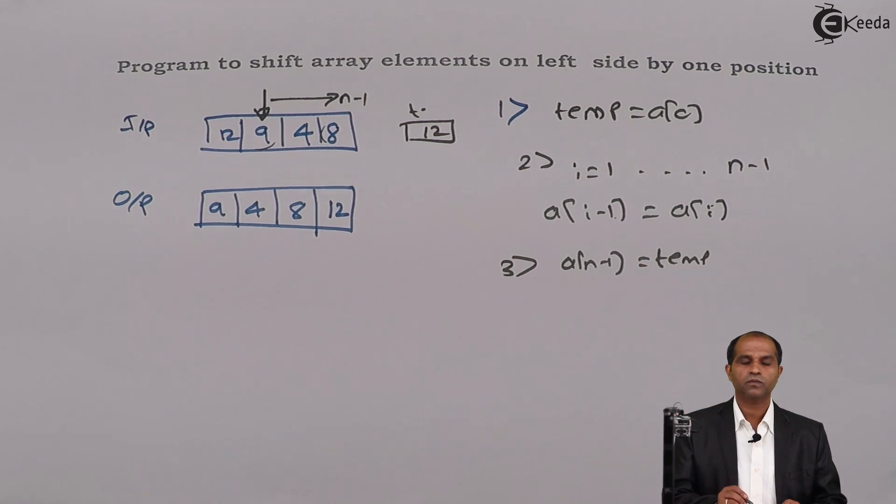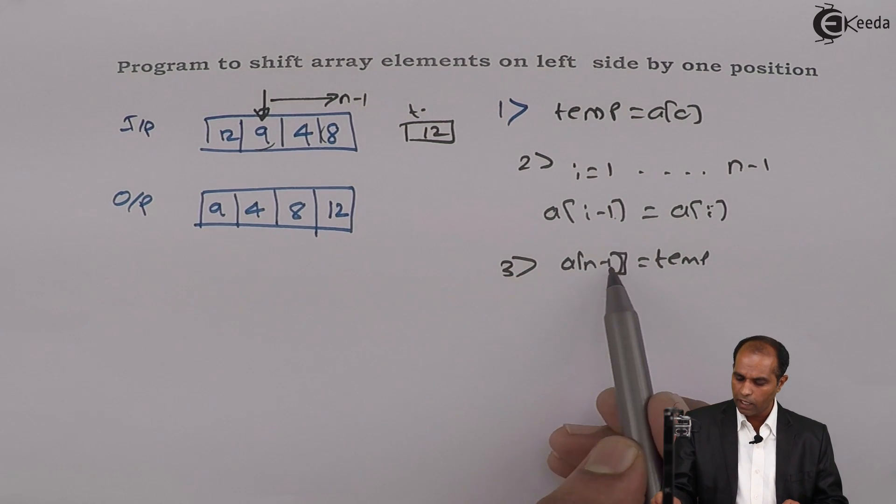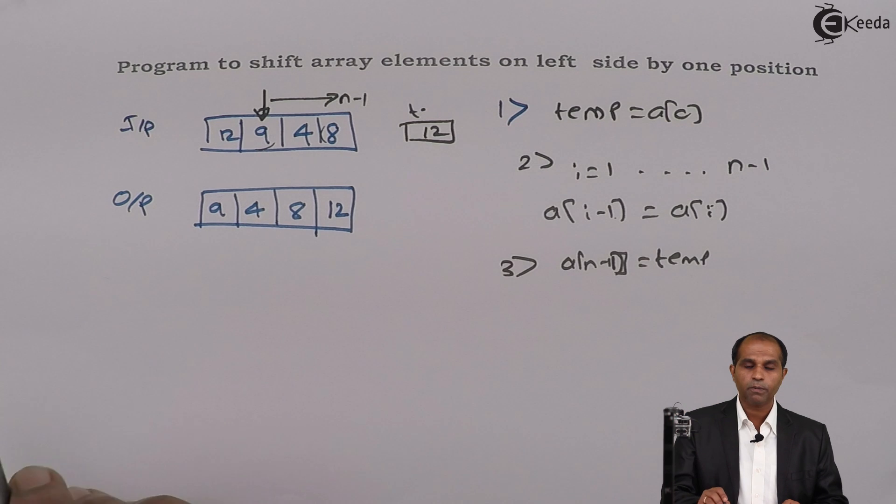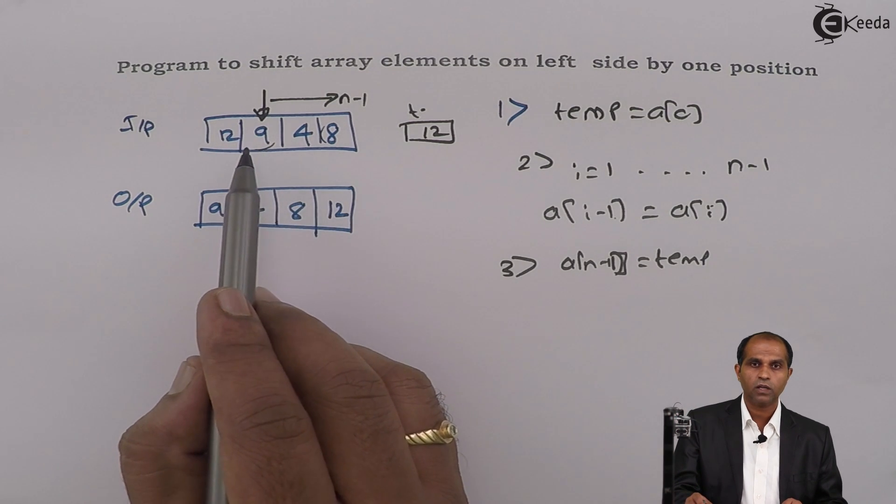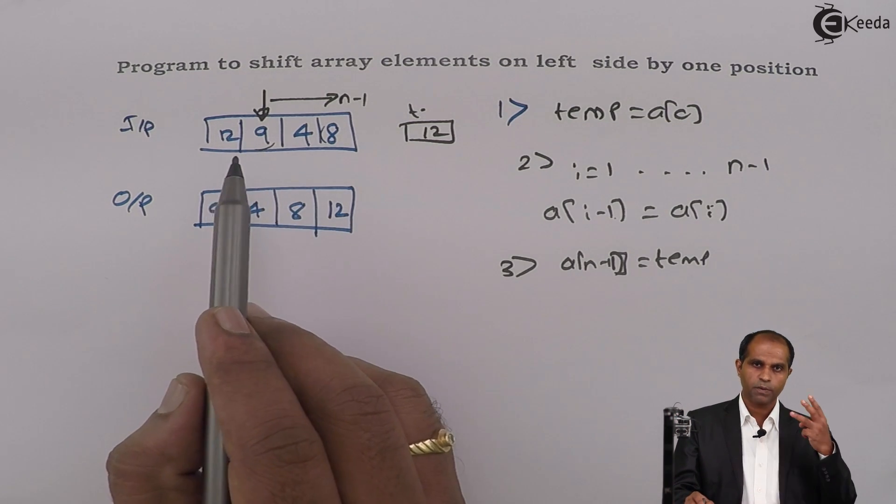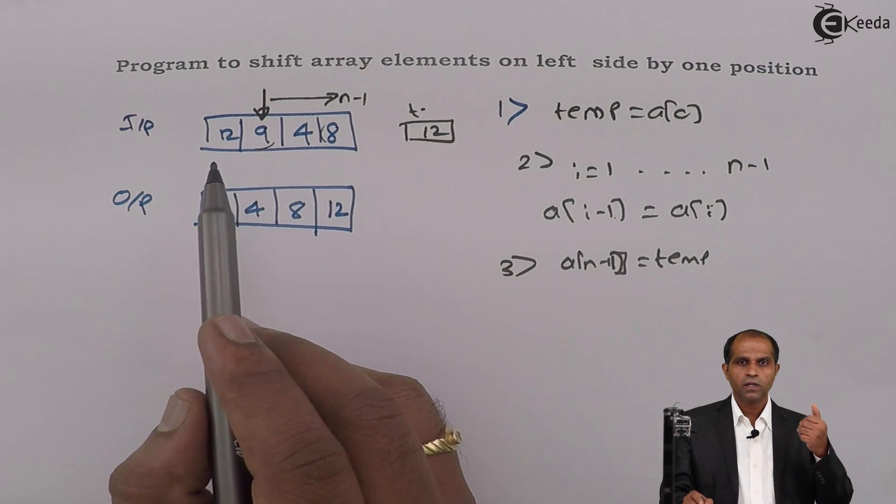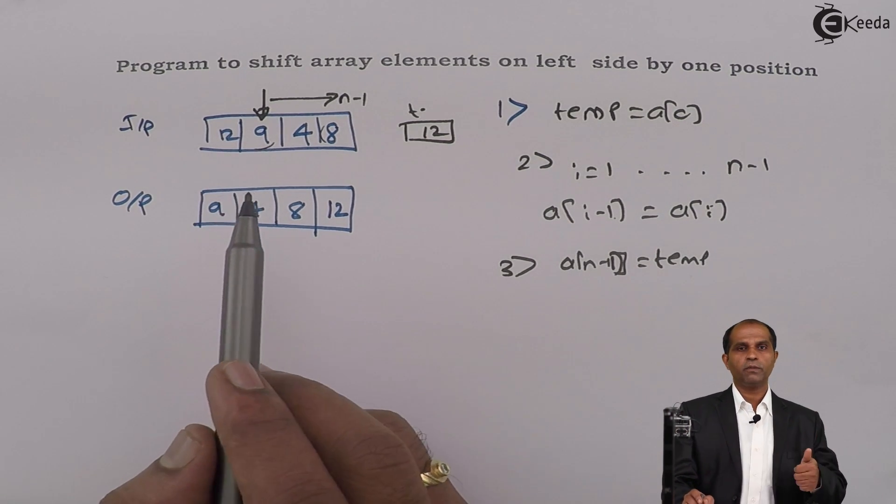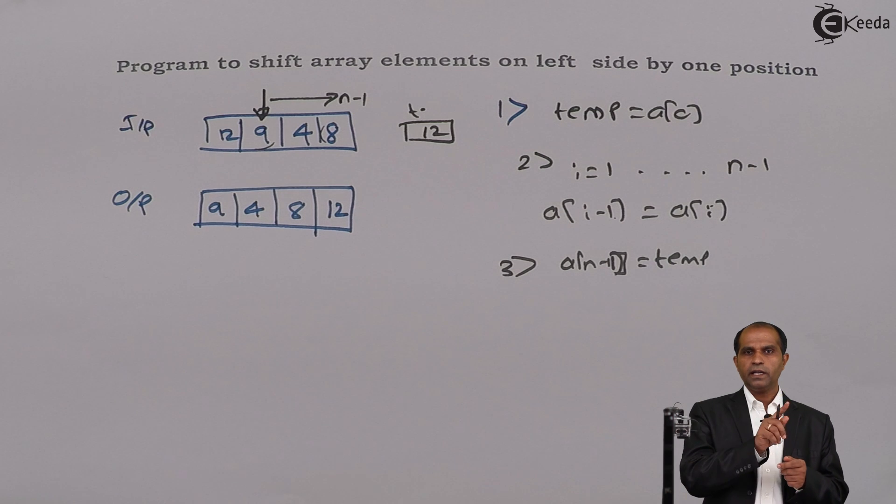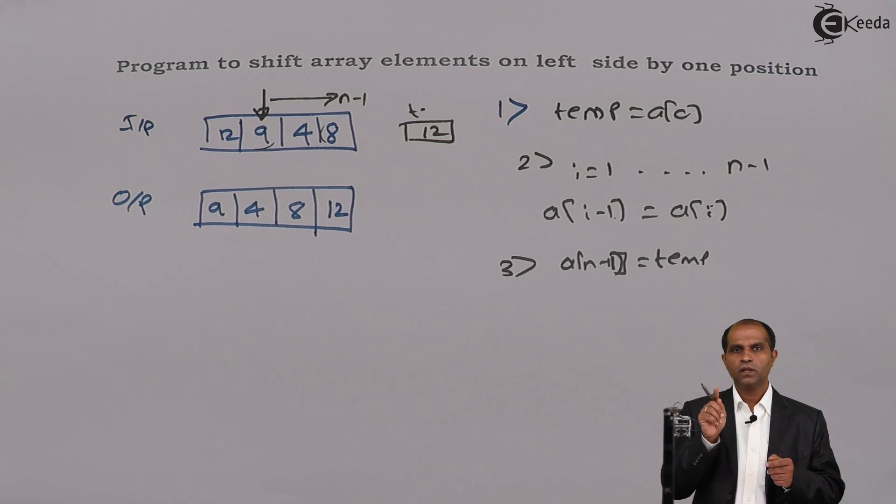Since it has went out from a[0], I will say a[n-1]. So I have copied the elements by multiple positions or by one position towards what? Left-hand side. Three simple steps, remember. One, say that copy the first element onto temp.